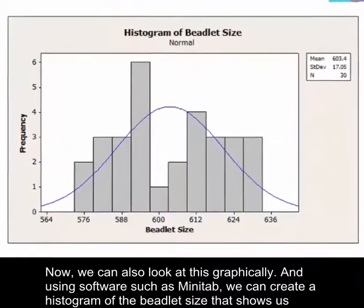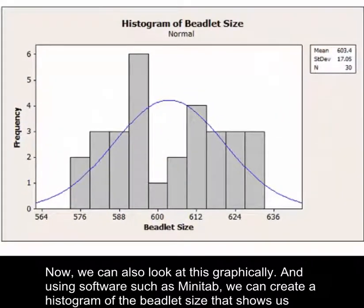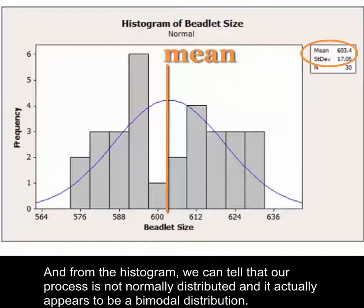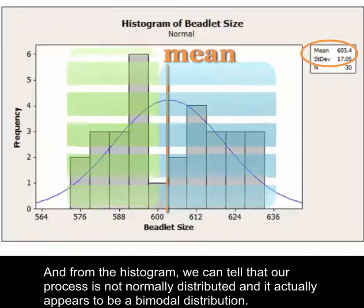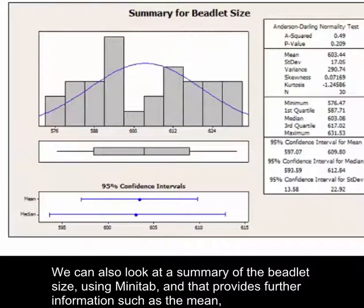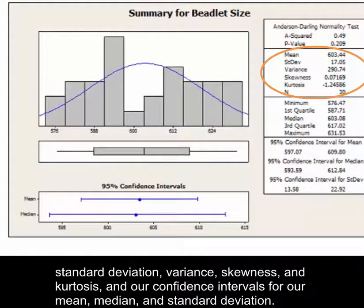We can also look at this graphically. Using software such as Minitab, we can create a histogram of the beadlet size showing the mean of 603.4 and a standard deviation of 17.05. From the histogram, we can tell that our process is not normally distributed and actually appears to be a bimodal distribution. We can also look at a summary of the beadlet size using Minitab, which provides further information such as the mean, standard deviation, variance, skewness, kurtosis, and confidence intervals for our mean, median, and standard deviation.